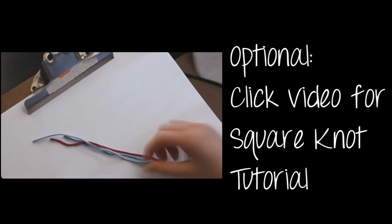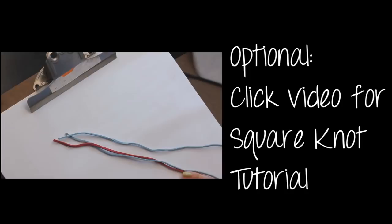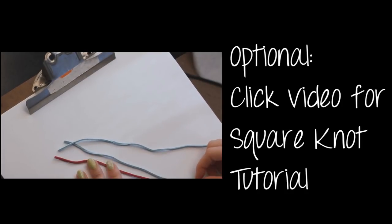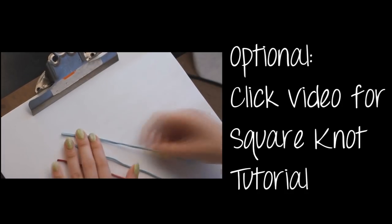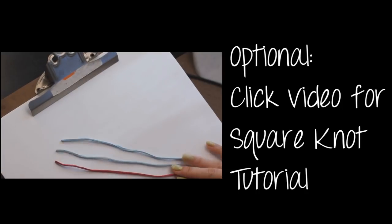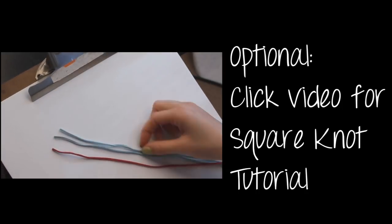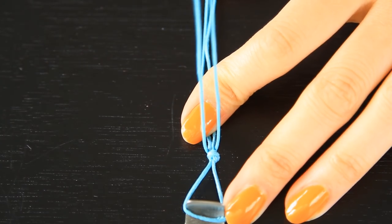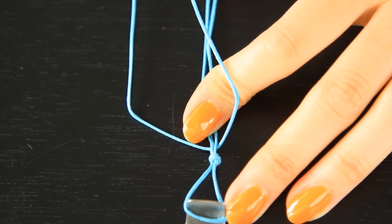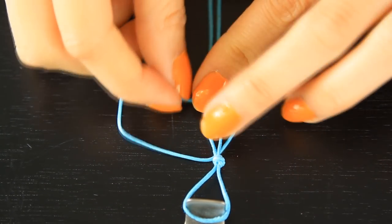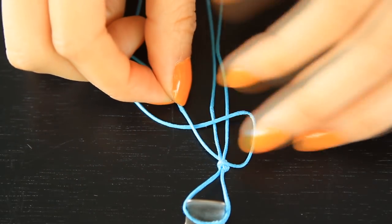So now we're going to make some square knots. I have a separate tutorial on how to make square knots. If you're confused with this video, you can definitely check out that other video. I explain it more in depth. So in this video, I'm just going to explain it quickly. Basically, now that you lined up the midpoint of your long string to the double strings, what you're going to do now is...